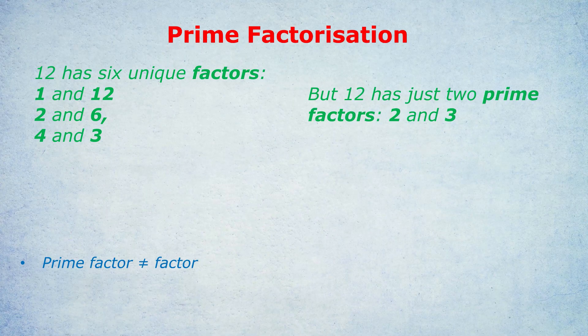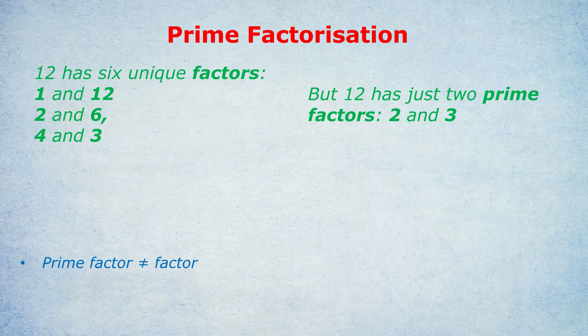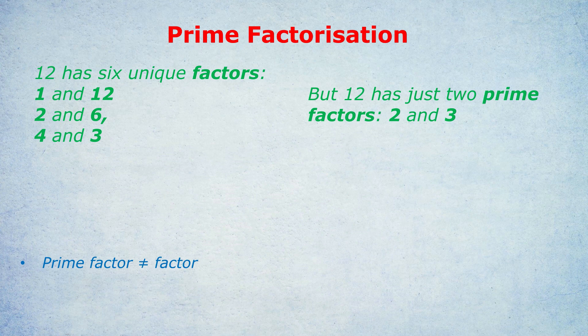Before I show you the tricks of prime factorization, let me clarify that there's a big difference between a prime factor and a factor. Look at the example on the screen. 12 has six unique factors. A factor is simply a number that goes into 12 without any remainder. The way I would find each factor is to do them in pairs: 1 times 12, 2 times 6, and 3 times 4. So those are the six factors of 12.